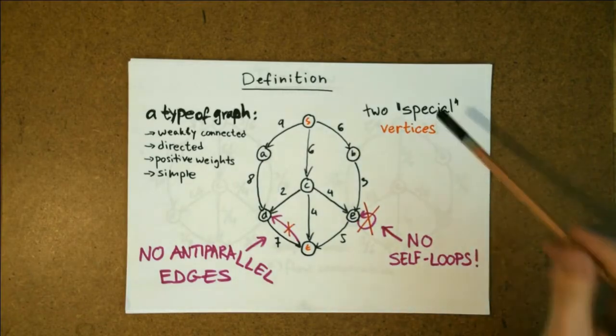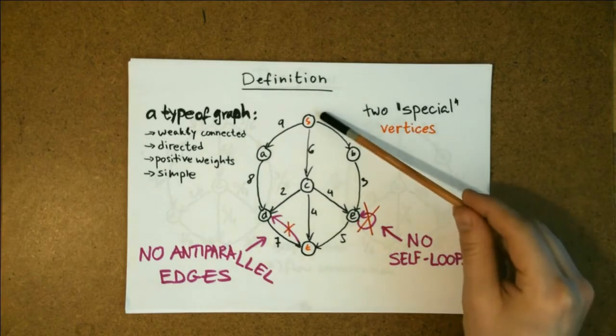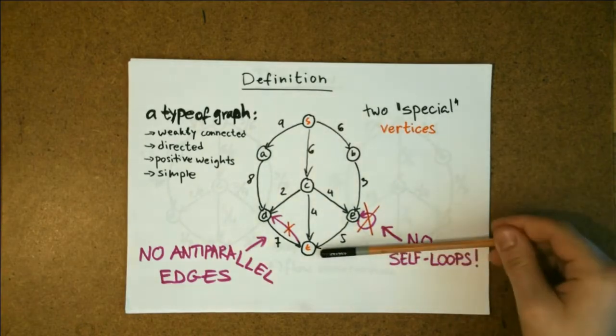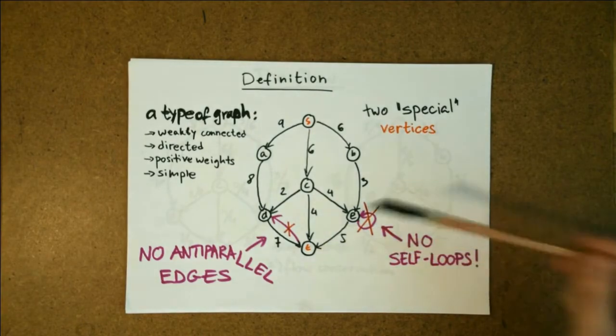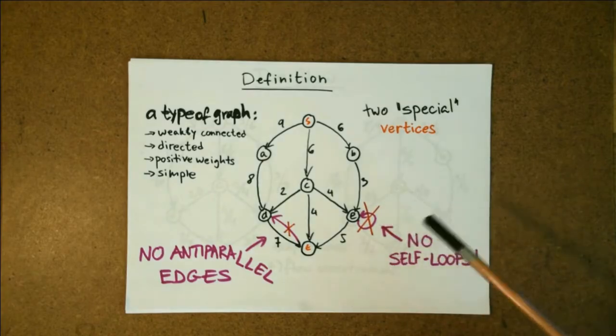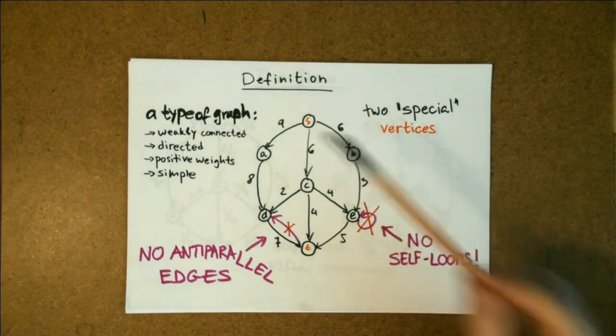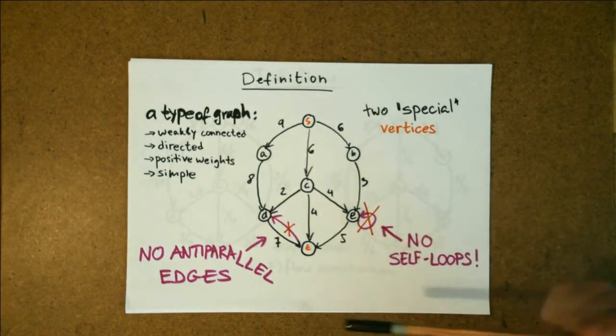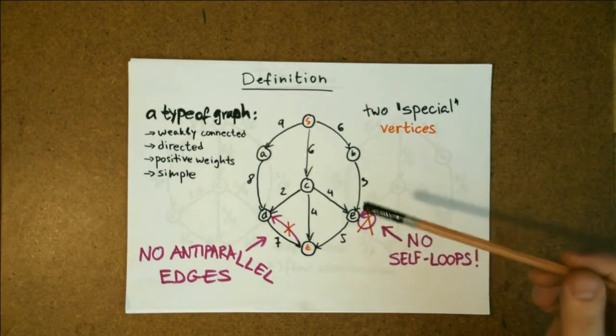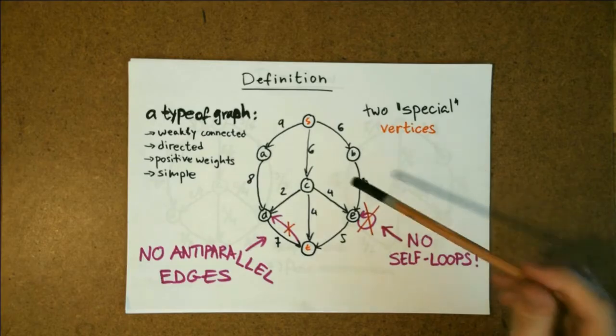Two vertices in the graph are special. One we refer to as a source and one we refer to as the sink. Flow networks are weakly connected directed graphs. This means that if we disregard the directions on the edges and think of the graph as an undirected one, then we can reach every vertex from every other vertex.